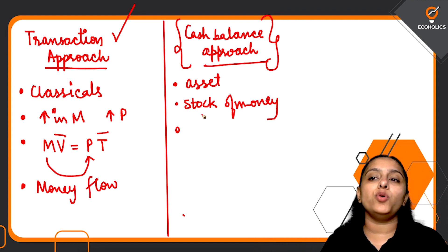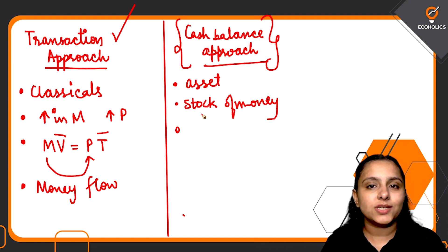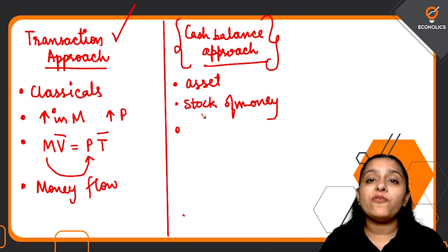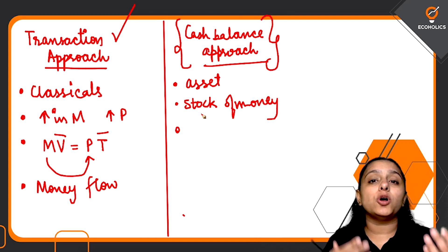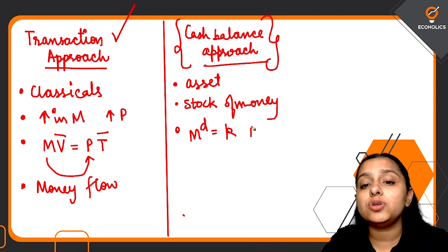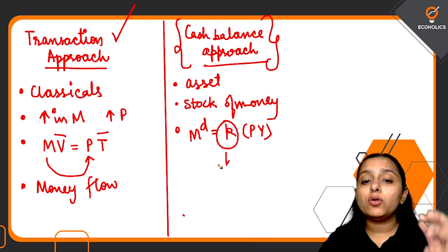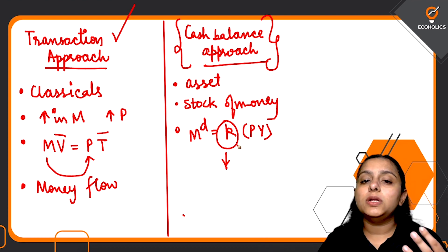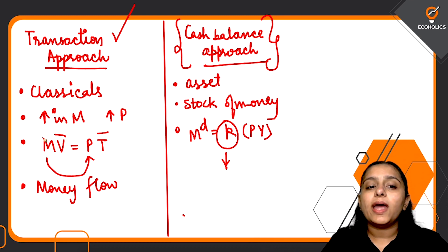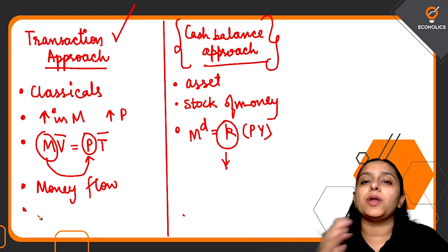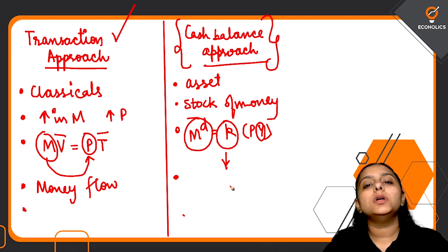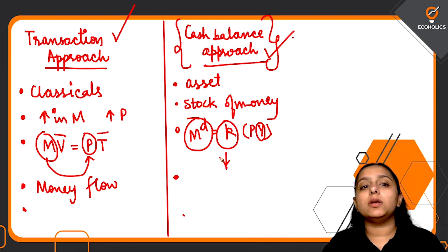In the cash balance approach, people hold on to money because it is treated as an asset. Even though keeping money with yourself won't give you interest, it can be used in emergency cases and for unexpected transactions, because the future is uncertain. Money demand is a proportion K of your nominal income — you will demand money as a proportion of nominal income and keep some with yourself as an asset. Here, money can also affect the output of the economy, unlike in the transaction approach.